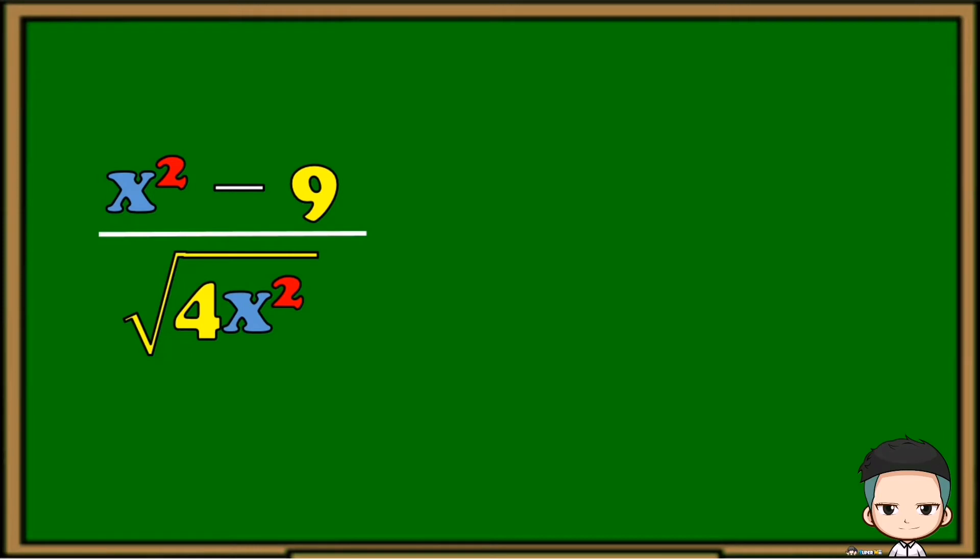We have here x squared minus 9 over the square root of 4x squared. Since 4 and x squared are both perfect squares, we can put them in their squared forms.